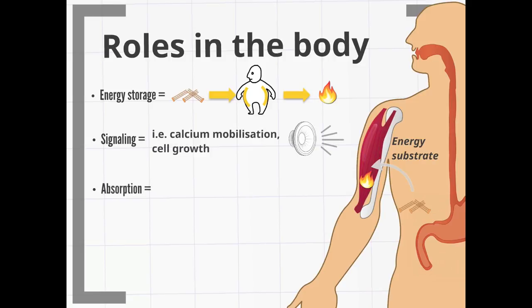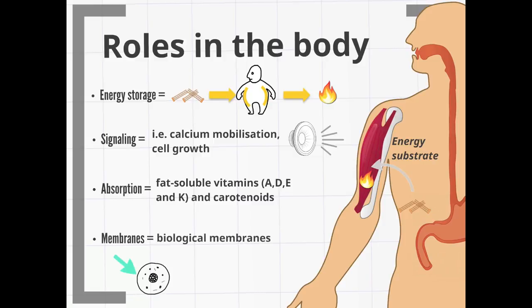Absorption: Some dietary fats are necessary to facilitate absorption of fat-soluble vitamins and carotenoids. Membranes: The glycerophospholipids are the main structural component of biological membranes.